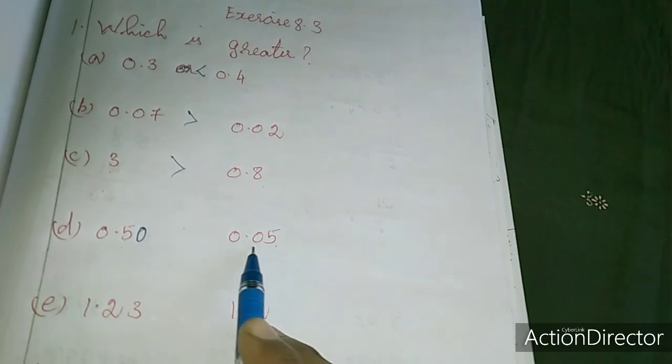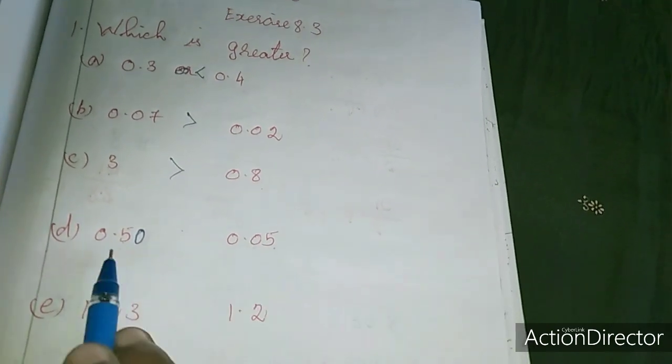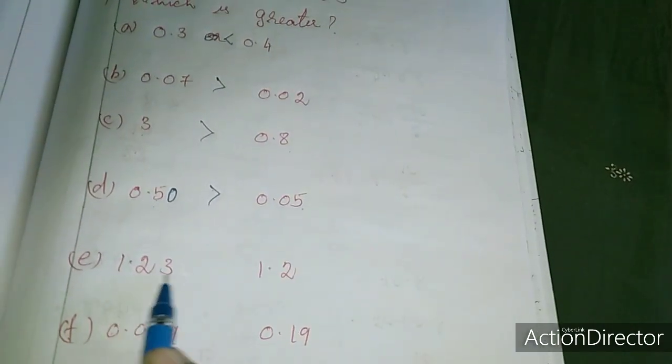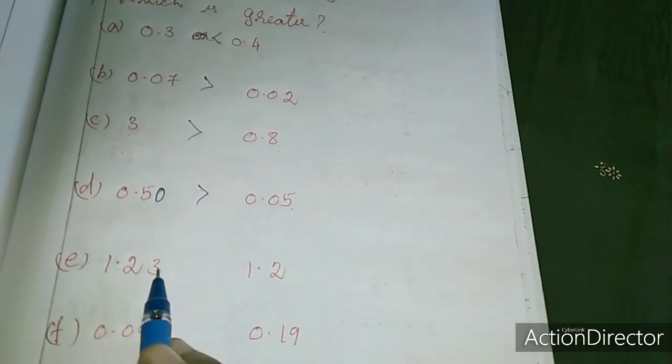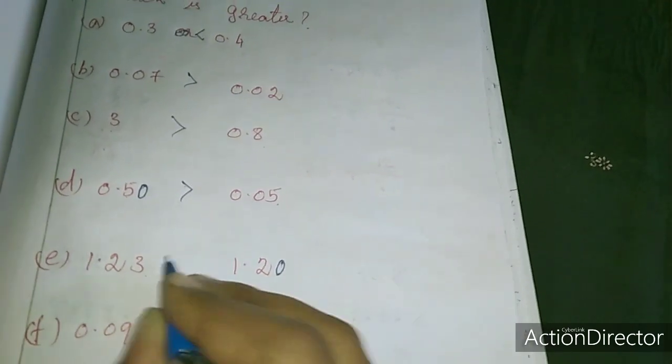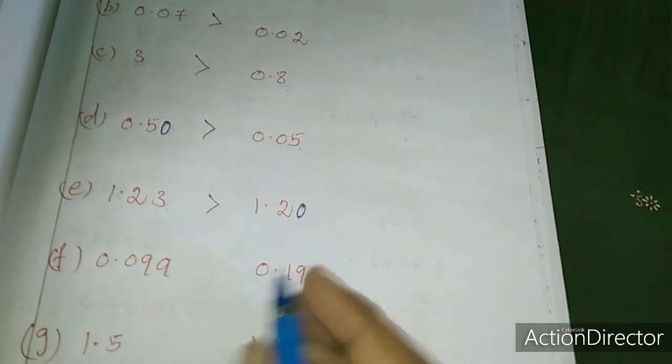Here 1.23 and 1.2. Equalize because we join zero: 1.23 or 1.20. 1.23 is the greatest. Here 3 digits, here 2 only, so I am adding zero.